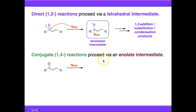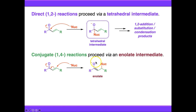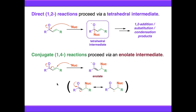Conjugate reactions, on the other hand, don't produce a tetrahedral intermediate — they produce something called an enolate. When we push the electrons onto the 1,4 position, we form a new carbon-carbon bond, then push the electrons from the carbon-oxygen pi bond up onto oxygen, giving an enolate intermediate. Enolates are nucleophilic and electron-rich, with a negative charge on oxygen. We can also draw a resonance form where electron density is pushed down onto carbon, so enolates are nucleophilic at both oxygen and carbon.